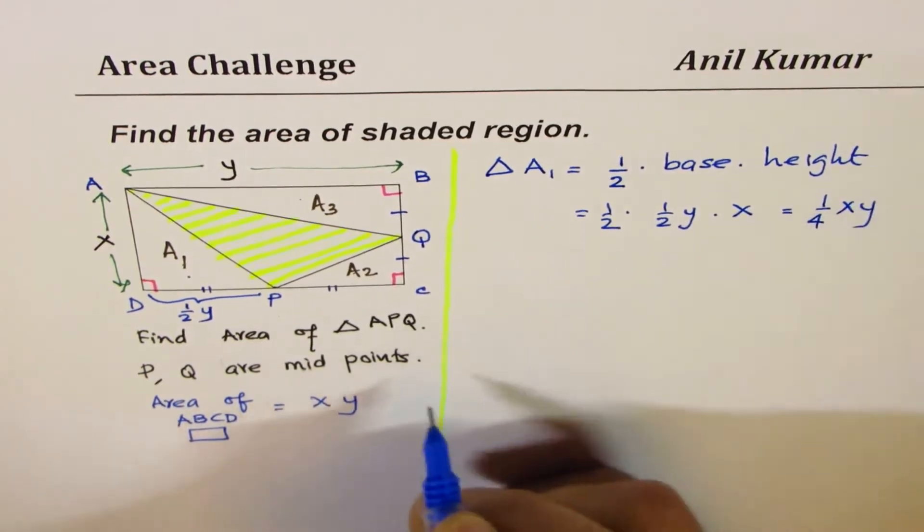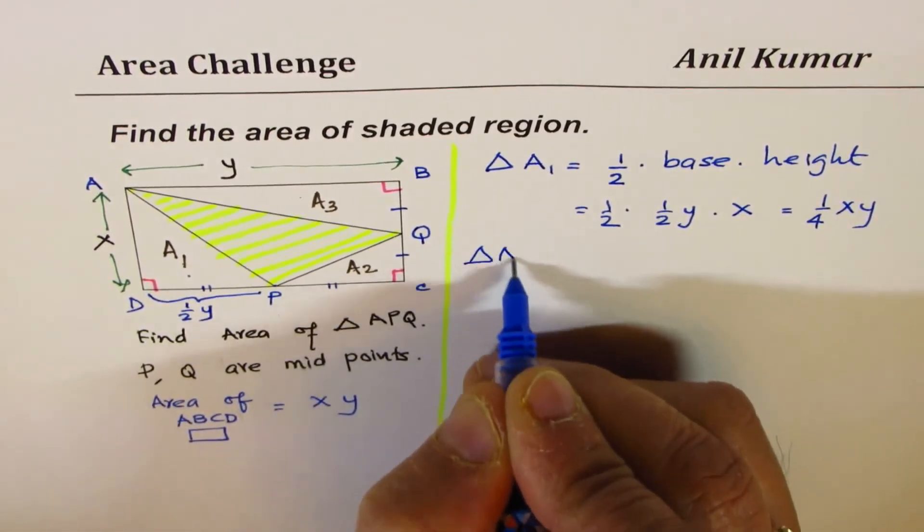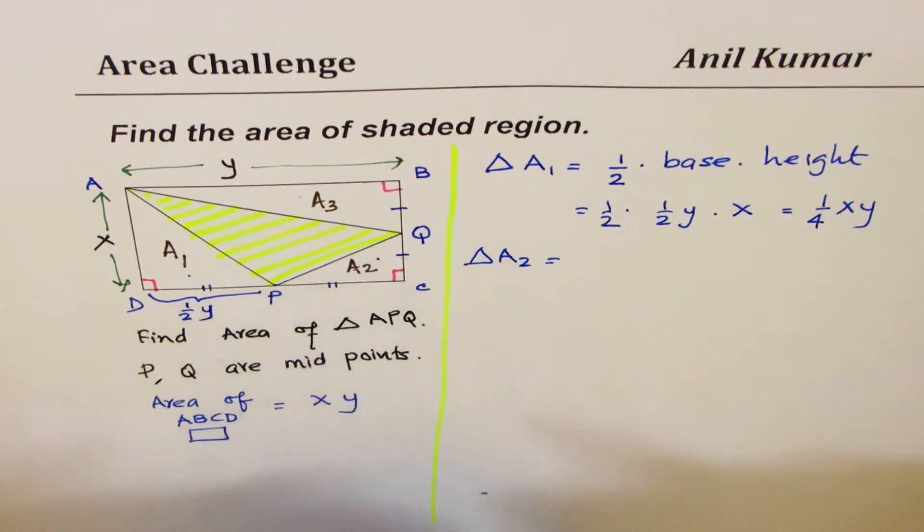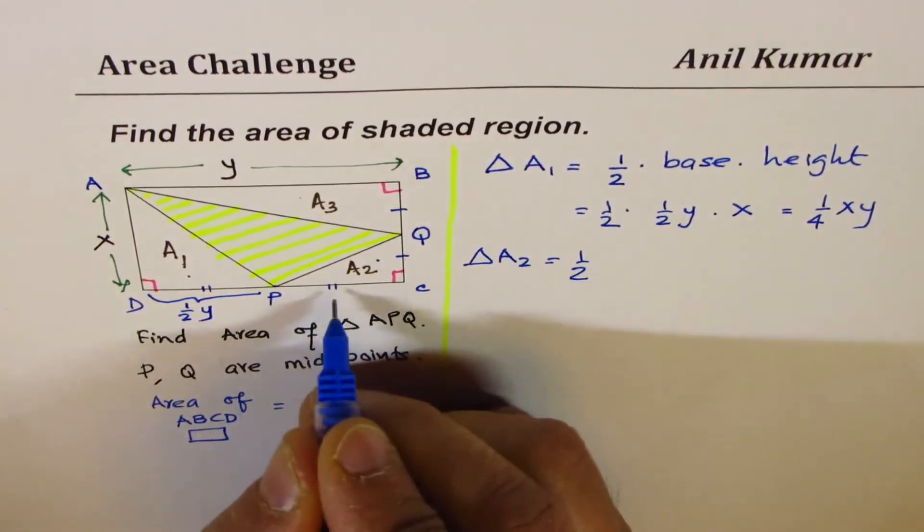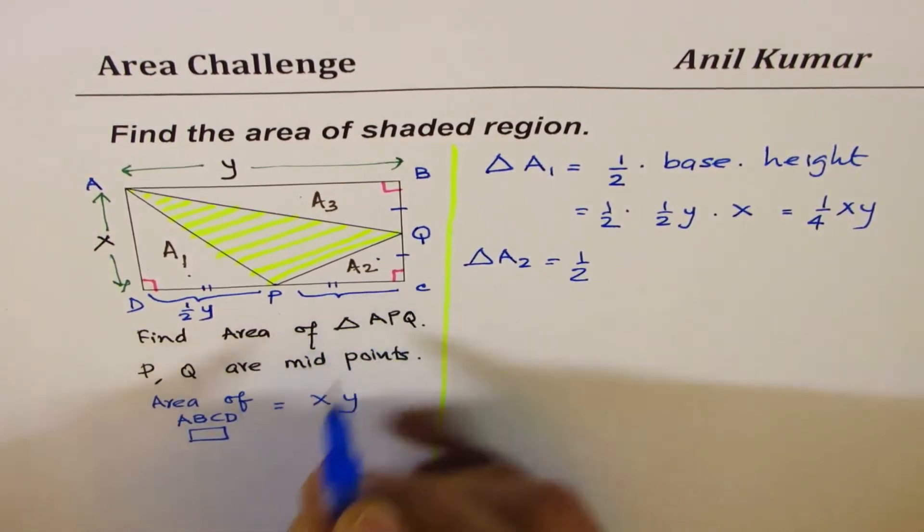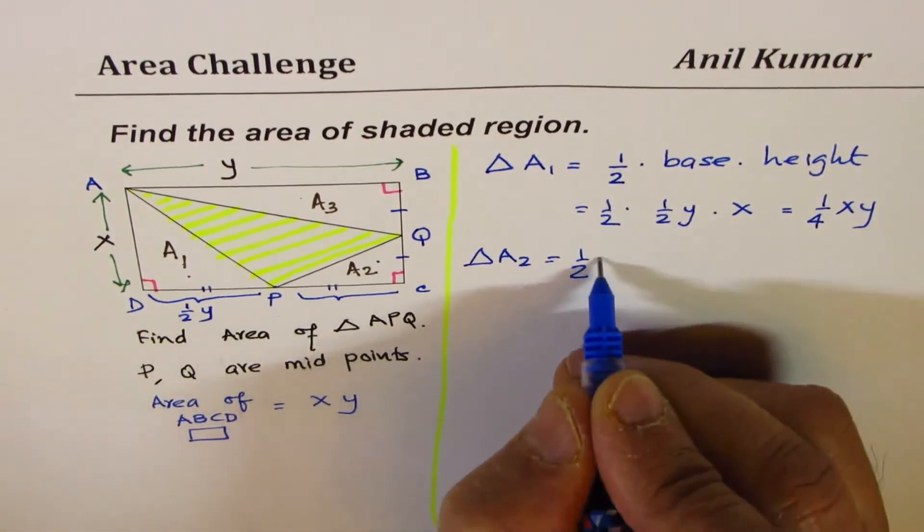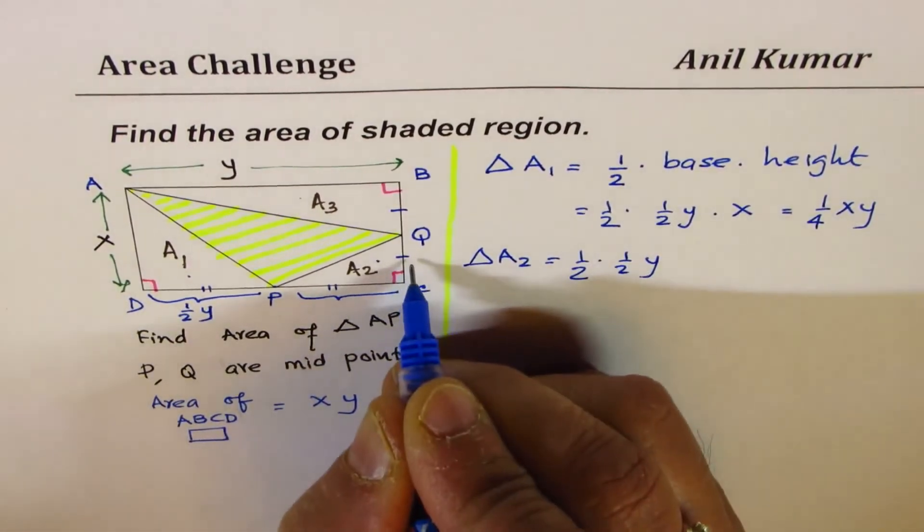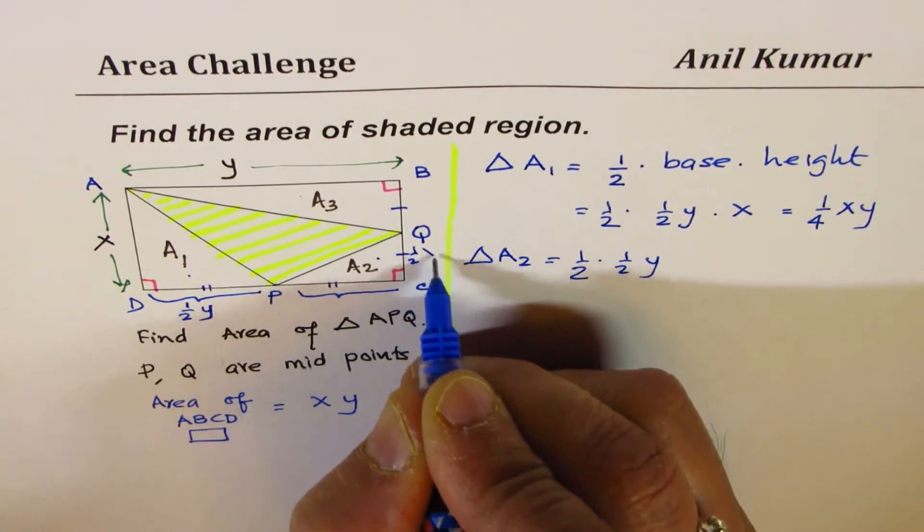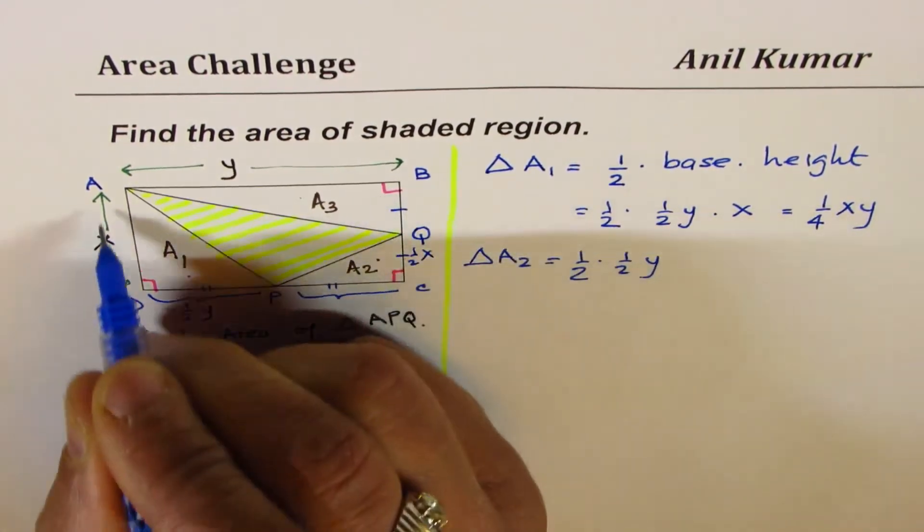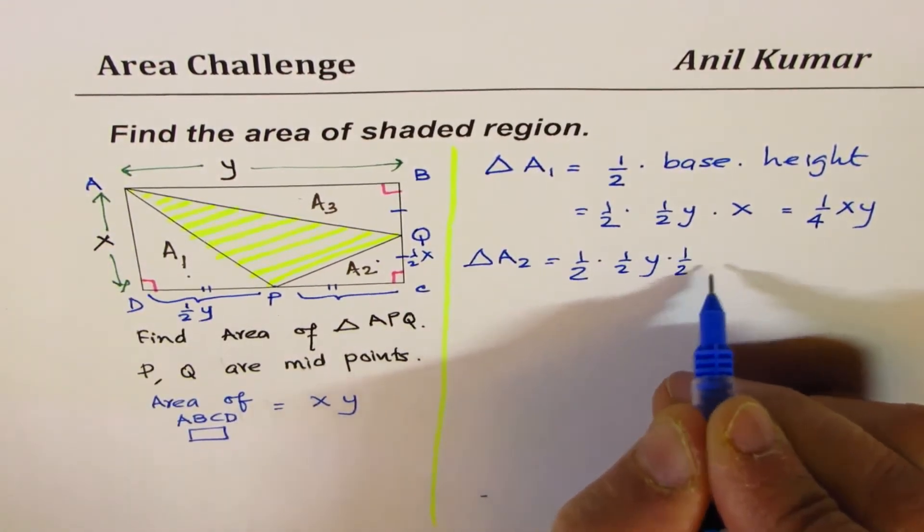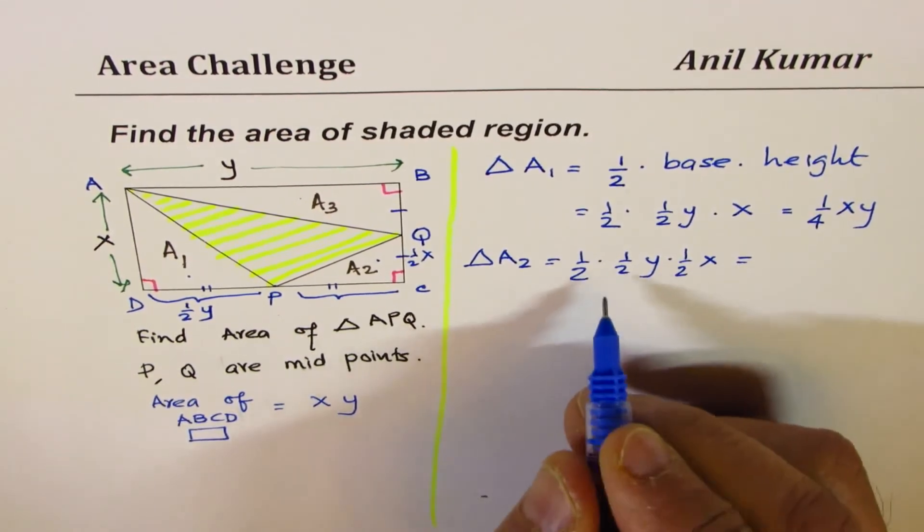What is the area of triangle A2? This triangle, again half base. Base is how much? This is my base, half Y. Half Y times this is half X. Total is X, half of it, so half times X, that gives us 1/8 of XY.